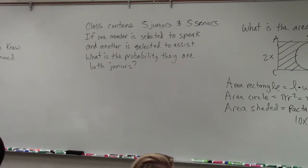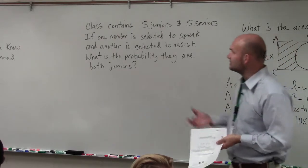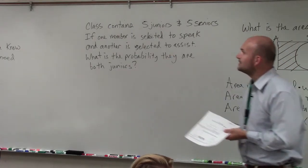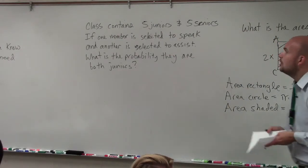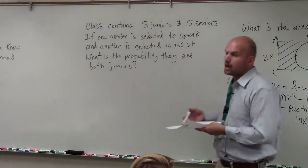So when we're looking at probability, this one says the class contains five juniors and five seniors. If one member is selected to speak and another is selected to assist, what is the probability they are both juniors?